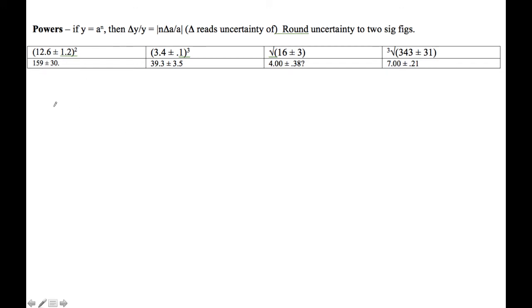Now we're going to do powers. The power rule is if y equals a to the n, then the uncertainty of y over y is equal to the absolute value of n times the uncertainty of a over a.